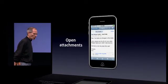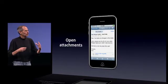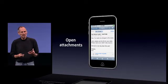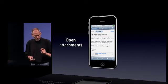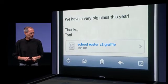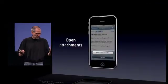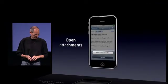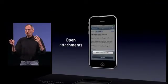And open attachments — the ability to get an attachment in email, tap on it, and open it with an app from the App Store. This is really great. In this case it's OmniGraph, and I can just tap it and it'll open with the app.